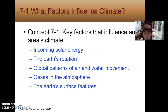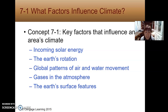Now we look at Section 1, which covers the major factors that influence climate. In summary, there are five factors that impact climate: number one, incoming solar energy — how much solar energy we receive; number two, the Earth's rotation; number three, global patterns of air and water movement, which redistribute heat; number four, gases in the atmosphere like greenhouse gases; and number five, the Earth's surface features such as mountains, rivers, or nearby oceans.